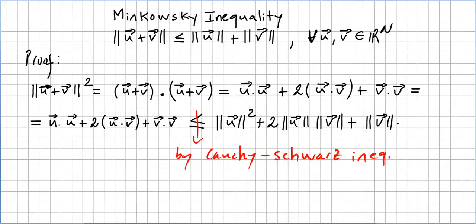But what is this? All this is nothing else but (||u|| + ||v||)².